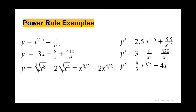For the second one, we have y equals 3x plus 8 over x plus 4 over x squared. So the derivative of that equals 3 minus 8 over x squared minus 8 divided by x raised to the third power. For the third one, we have the cube root of x raised to the eighth power plus 2 times the square root of x raised to the fourth power. That simplifies to x raised to 8/3 plus 2x raised to 4/2, and the derivative equals 8/3 times x raised to the 5/3 plus 4x.